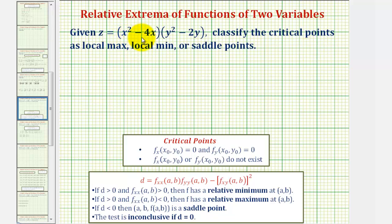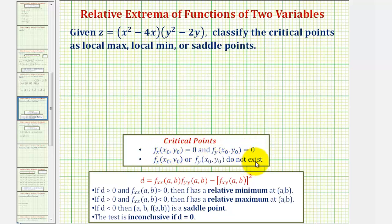We're given z equals the quantity x squared minus 4x times the quantity y squared minus 2y. We want to classify the critical points as local maximums, local minimums, or saddle points. To find the critical points, we'll determine where the first order partial derivatives are both equal to zero, or where either does not exist.